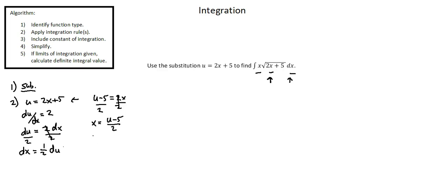I'm going to rewrite my integral using my substitutions. The integral of: the first term is x, which is now u minus 5 over 2, times the square root of 2x plus 5 — we're replacing 2x plus 5 with u — times dx, which we're going to replace with 1 half du, all with respect to u. This is our new integral.